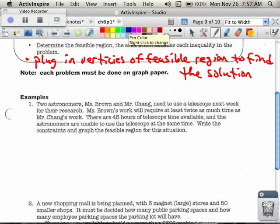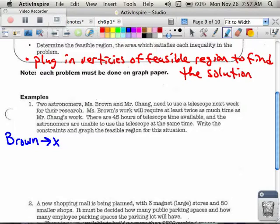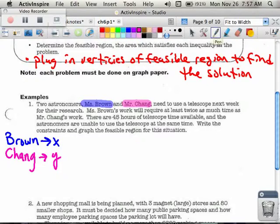So first of all, let's pick what we want to do for Ms. Brown and Mr. Chang. So since Ms. Brown came first, let's just say that we choose Ms. Brown to be our X. And then, kind of going with that, let's make Mr. Chang our Y.